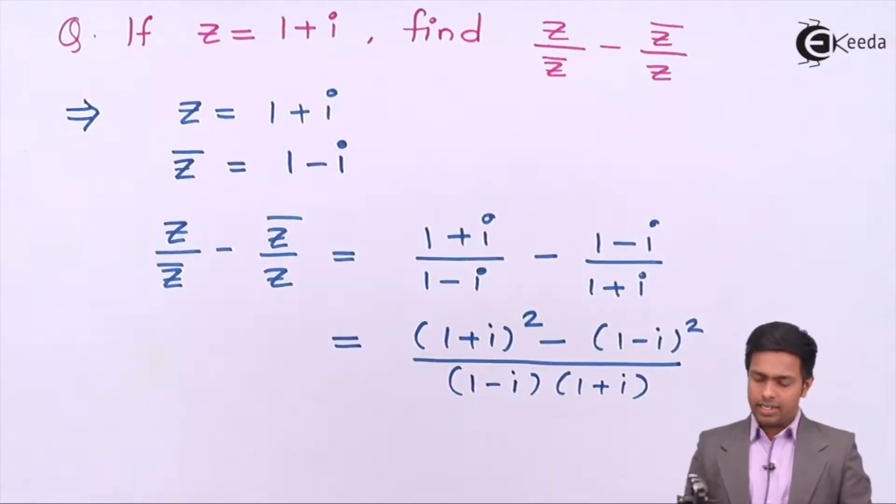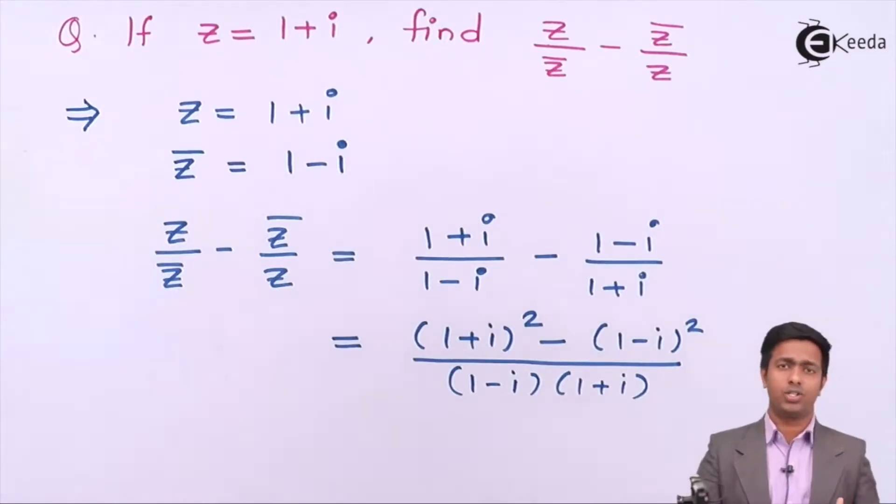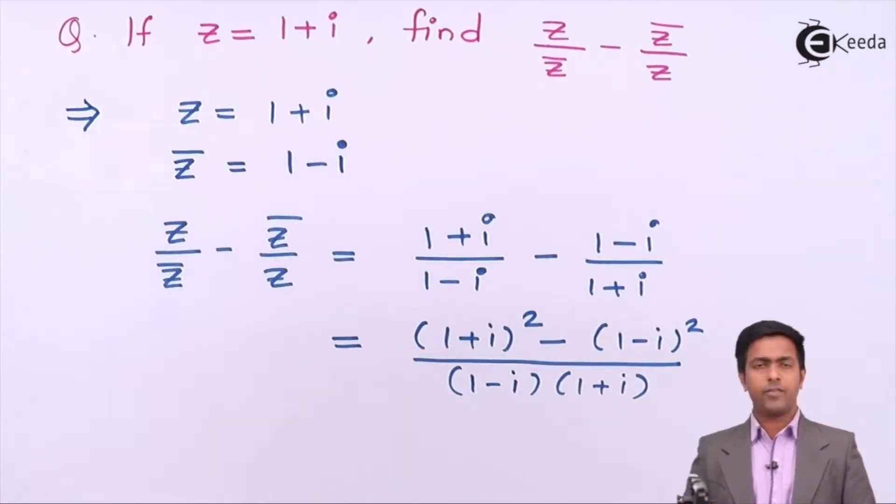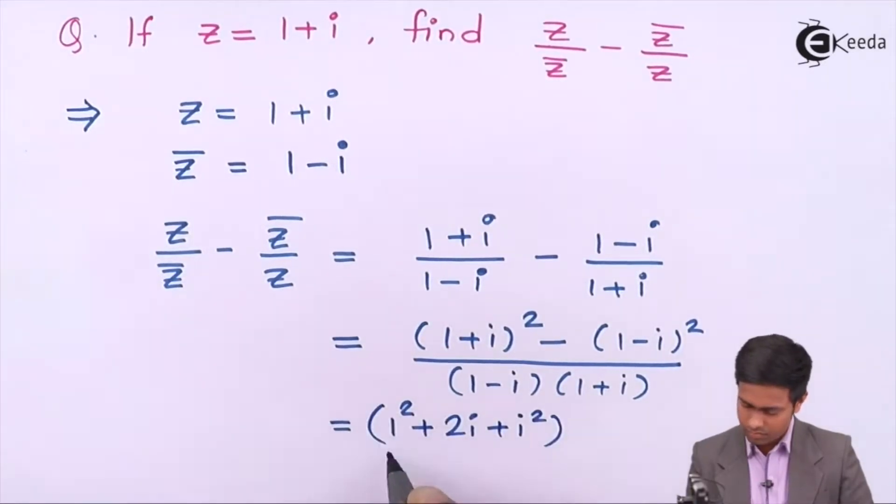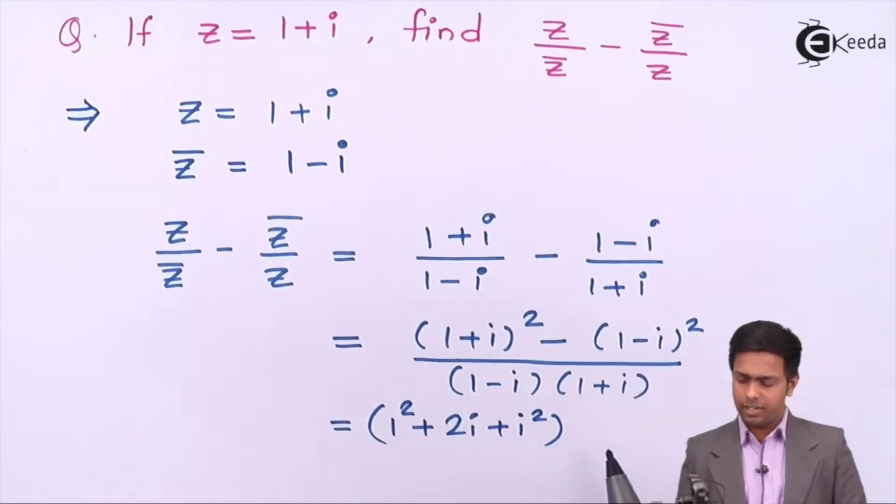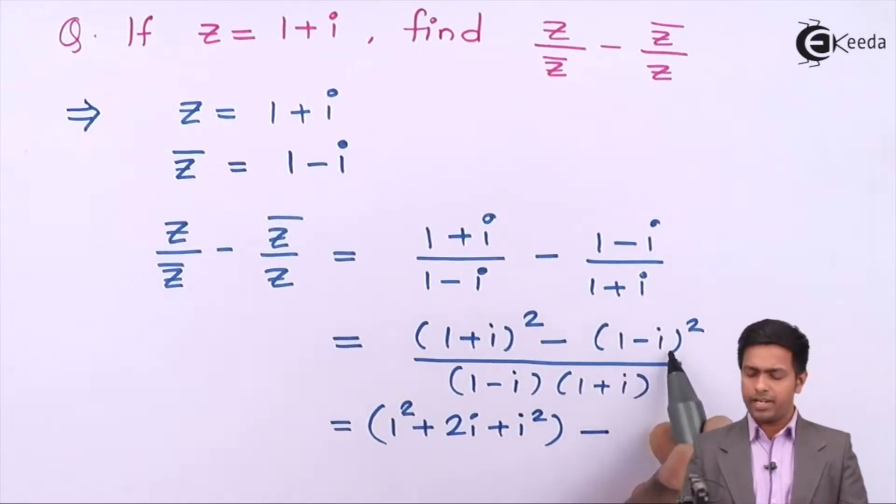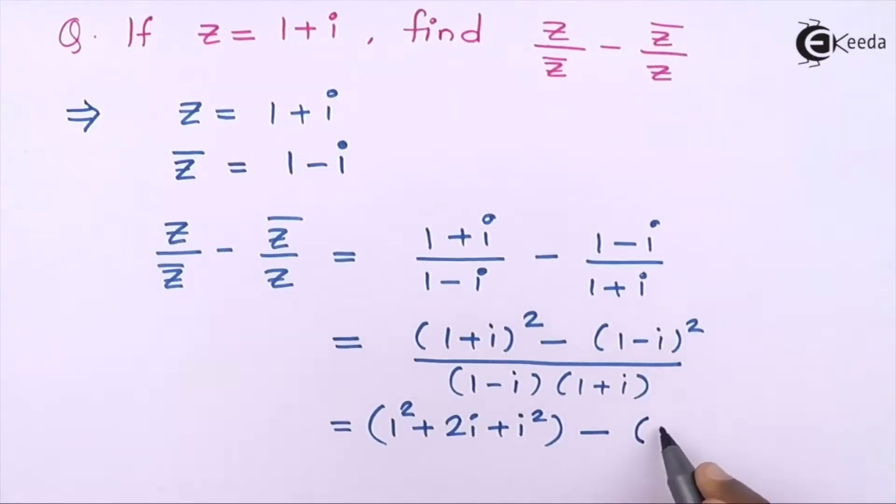Now let's find out the square. To find out the square we will use the formula of algebra like (a plus b) the whole square, which is a² plus 2ab plus b². By that formula here we will get 1 plus 2i plus i². Now for the second term we will again use the formula of (a minus b) the whole square, which is a² minus 2ab plus b². So here is 1 minus 2i plus i².